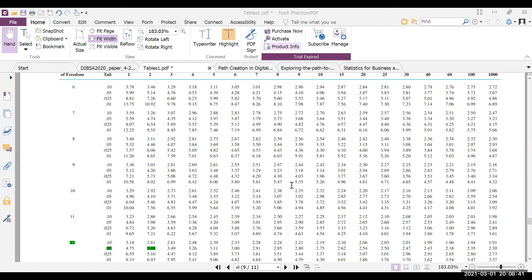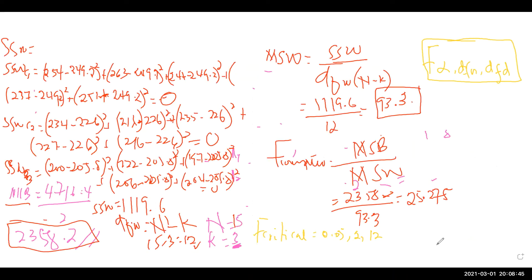So in this case, when I come back here, my F critical is 3.89. Now we are comparing F computed and F critical, because it is at this point that we have to make a decision whether we are rejecting the null hypothesis or we are failing to reject the null hypothesis. In simple terms, we are saying that if F computed is greater than F critical, reject H0. Therefore in our case, we have 25.275 comparing to 3.89. This is greater than this, so we reject the null hypothesis.